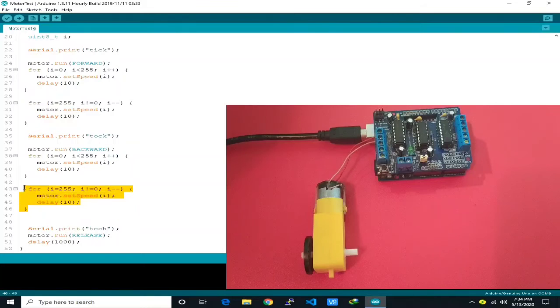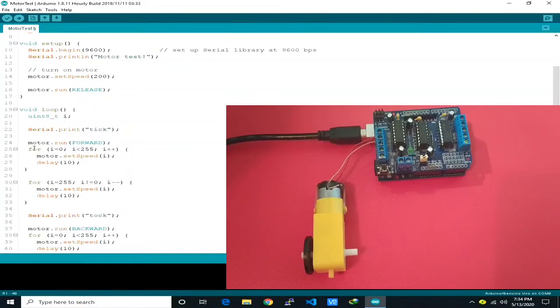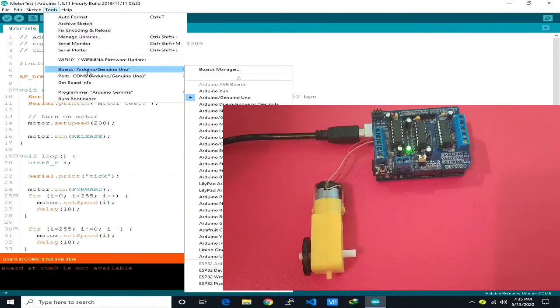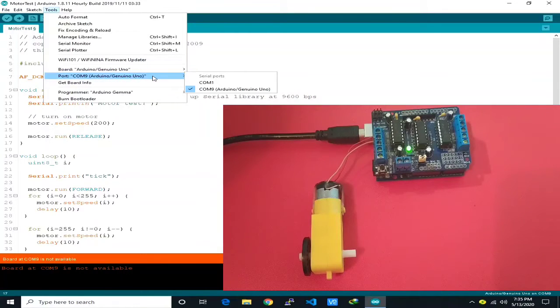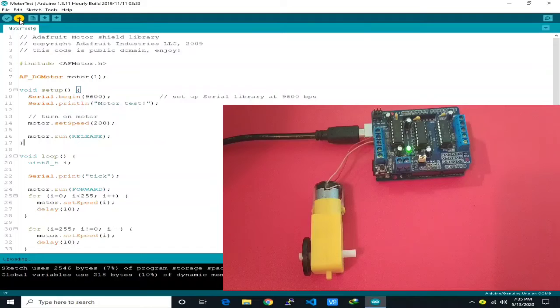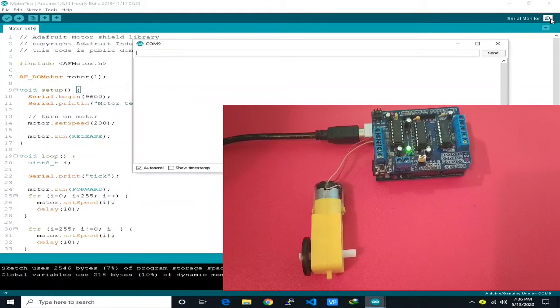Next we will choose the correct board which is the Arduino Uno board then make sure that the correct serial port is selected, here COM9. After that we upload this sketch. Wait until the compilation and the upload is finished. After done uploading we can check also the serial monitor, motor test tick.